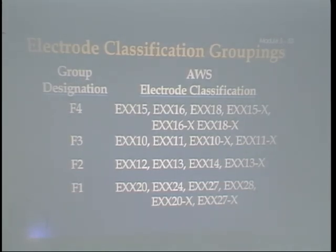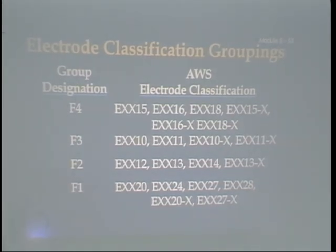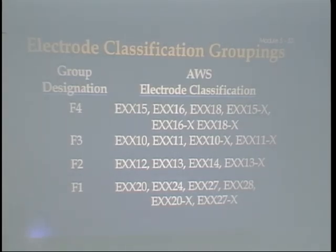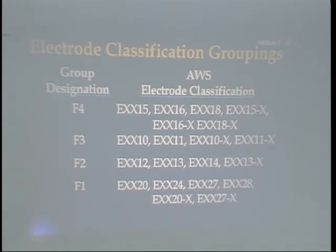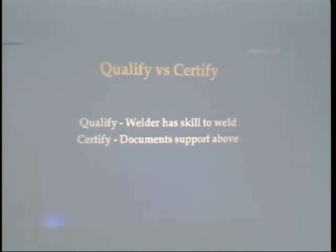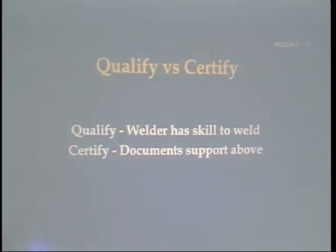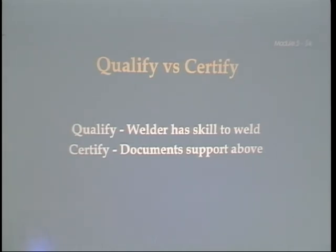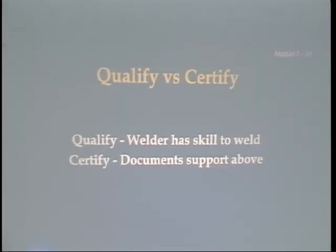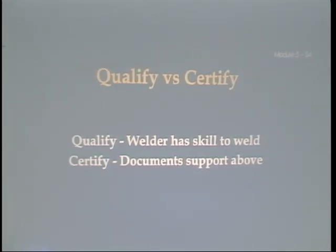Put a bullet by the next paragraph: 'The specific welding technique used is also considered to be an essential variable for welder qualification. Changes in such details as the direction of welding for the vertical position will require additional qualification testing.' Other technique-related essential variables include changes in process, position, and base metal type. Qualify versus certify: to qualify means the welder has the skill to weld; to certify means he has documents supporting that he has the skills to weld.